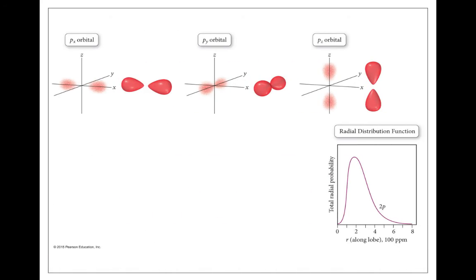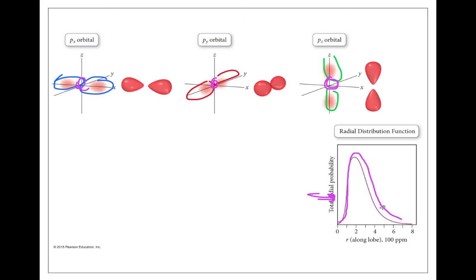We've got our px orbital with lobes lying along the x-axis, our py with the same lobes but along the y-axis, and our pz with its lobes along the z-axis. We can see zero probability for all of these right in the center. As we go out along the axis, the probability goes from zero up to some maximum and then back down, with an exponential decay that never really reaches zero.